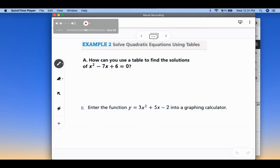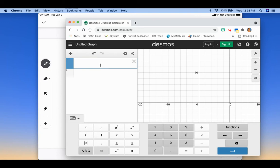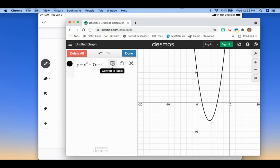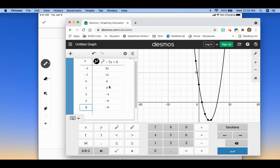So the next example is how can you use a table to find solutions? So we're going to look at x² - 7x + 6. So I'm going to show you how to do this on Desmos as well. So I'm going to clear this. So it is y = x² - 7x + 6. So you see that gives us our graph. But if we want a table, you can go up here to the settings, and you'll see there's a table. So I'm going to hit convert to table, and you'll notice it puts it into a table for me. And if I want more points, so maybe I want 3 and 4, 5, 6, I can add more points to the table.